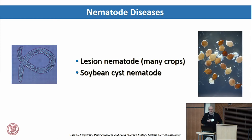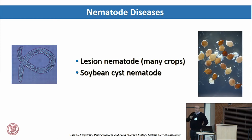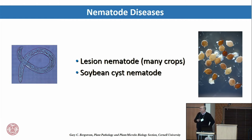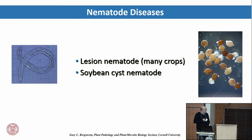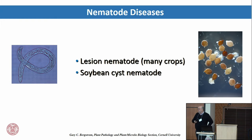Lastly, nematodes — the parasitic roundworms — are favored by movement through films of water in the soil to infect into the roots. The most notable example is soybean cyst nematode, which we may say a little bit about if we have time.